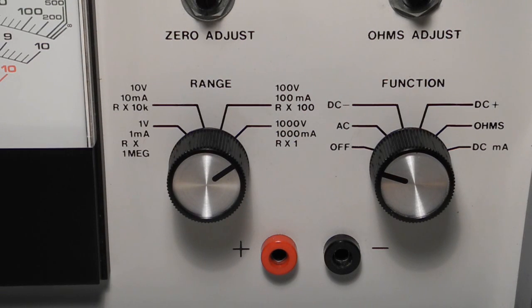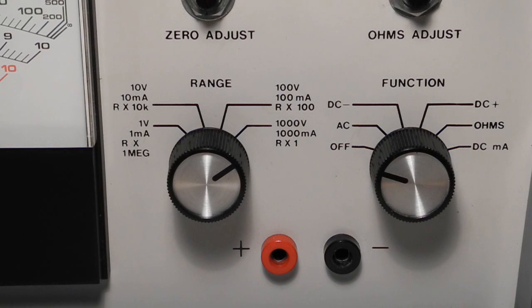The left knob selects one of four ranges: 1, 10, 100, or 1,000 volts or milliamps, or for resistance, times 1, times 100, times 10,000 or times 1 million.